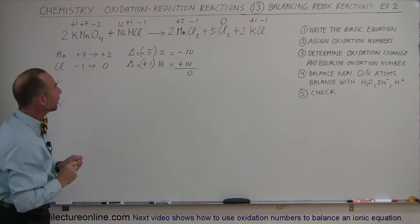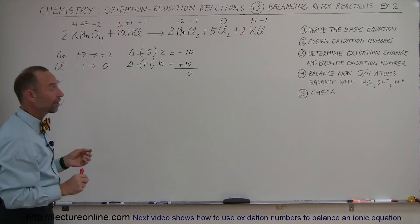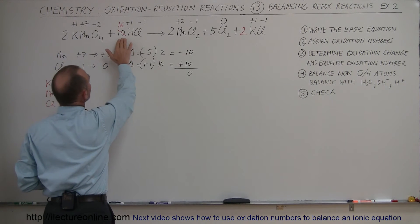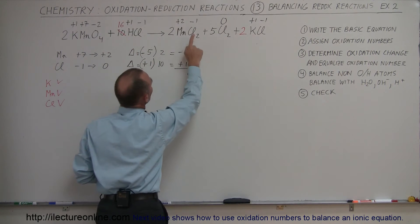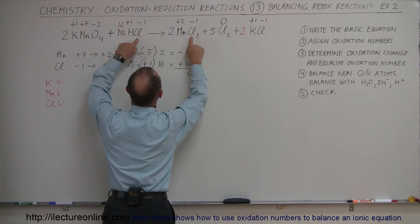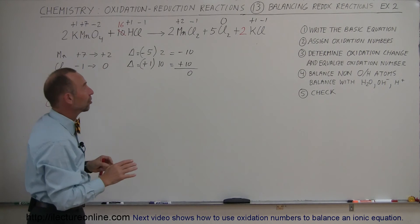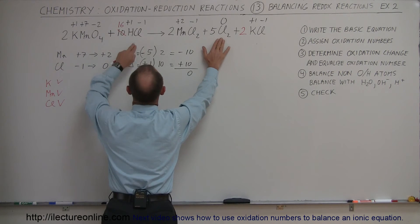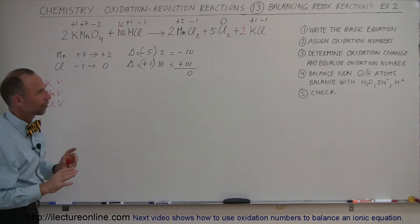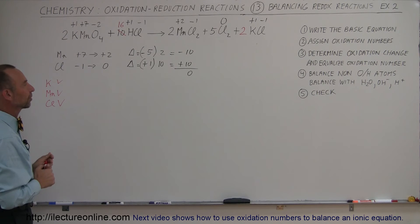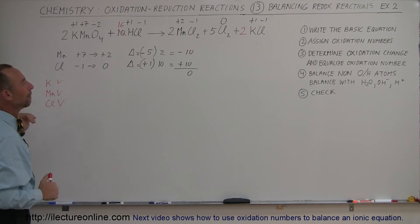You might wonder whether plugging in 2 and making this a 16 messes up the oxidation number balancing — and the answer is no. Notice that the chlorine here did not change its oxidation number, and the chlorine there did not change its oxidation number either. The only ones we have to worry about are the 10 chlorine atoms that change from minus 1 to 0. So we're still good as far as balancing the oxidation numbers, and now potassium, manganese, and chlorine are all balanced.